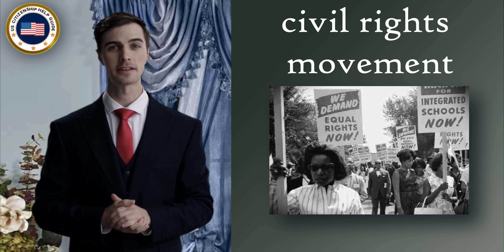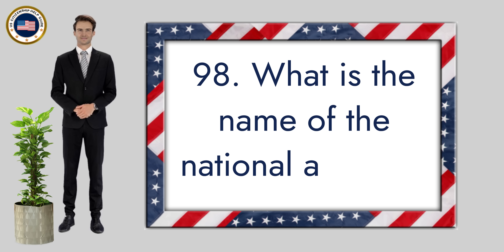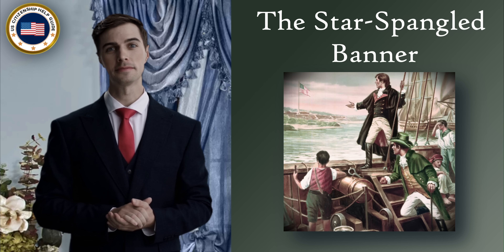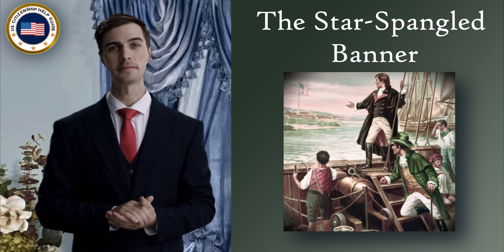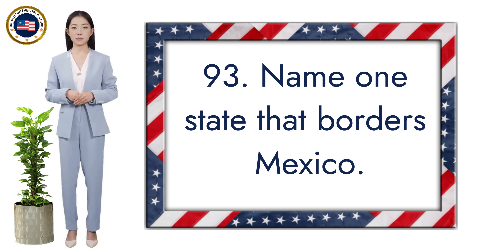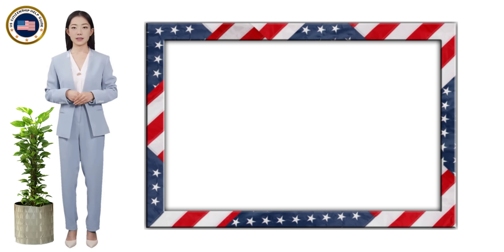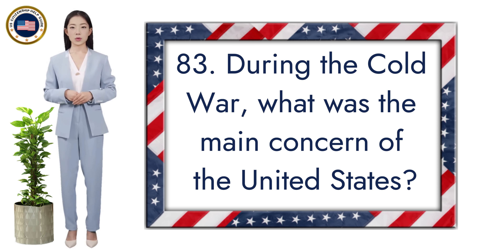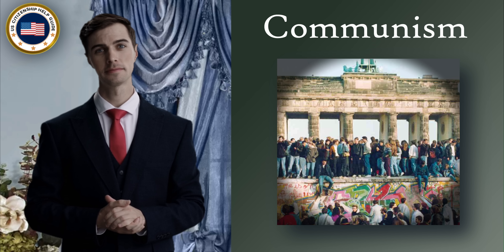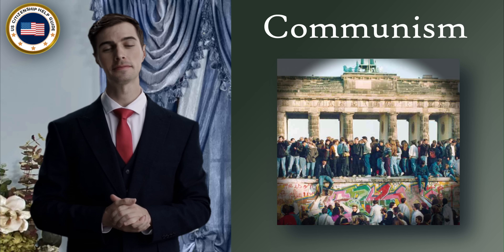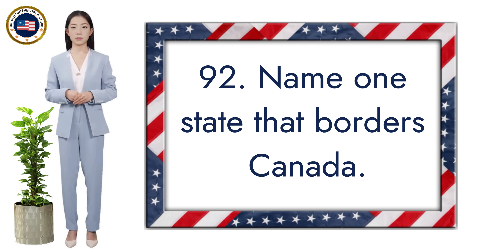What are the two major political parties in the United States? Democratic and Republican. What movement tried to end racial discrimination? Civil rights movement. What is the name of the national anthem? The Star-Spangled Banner. Name one state that borders Mexico. California.